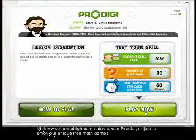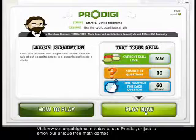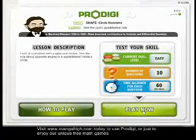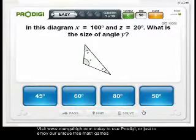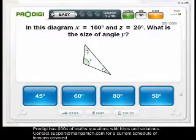So I'm now going to demonstrate a more complicated topic, which is circle theorems in shapes, and the lesson is the cyclic quadrilateral rule. So I'm just going to go ahead and play now. And because Prodigy is adaptive, it knows that I haven't played this lesson before, and so it's starting me off with easy questions. So here is a simple one, just about triangles, and this is a prerequisite topic that builds into the cyclic quadrilaterals rule.